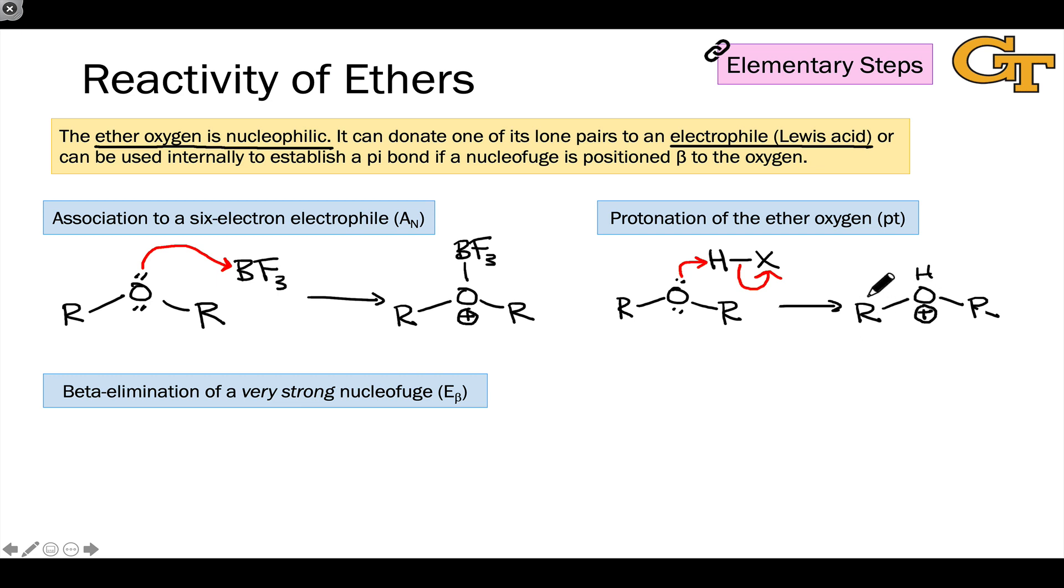Ether oxygens can also engage in beta elimination steps, and one of the most important examples of this occurs in a carbohydrate context in which one of the alcohol groups in a carbohydrate is protonated, creating a very strong nucleofuge next to an ether-type oxygen. Strictly speaking, this is part of a different functional group, which we'll see later in the course, but nonetheless,